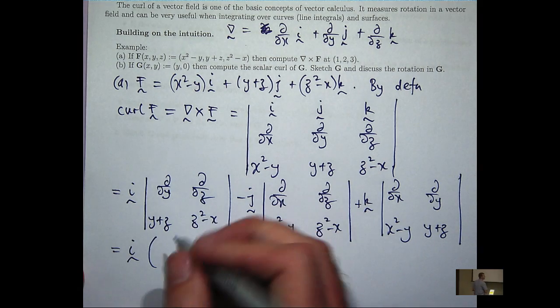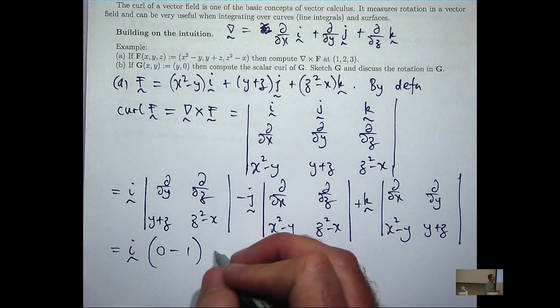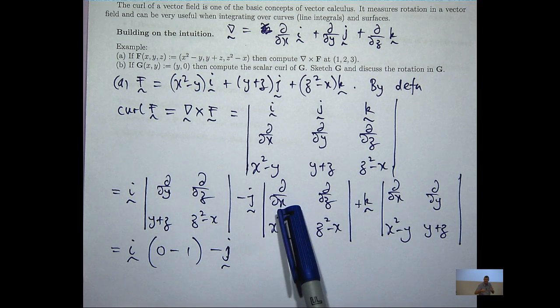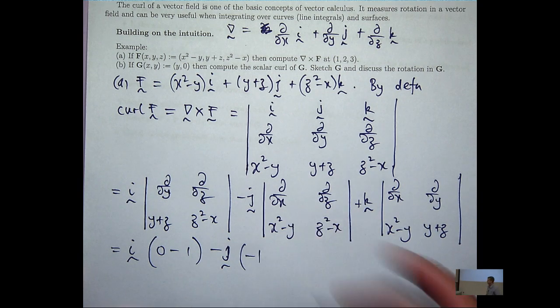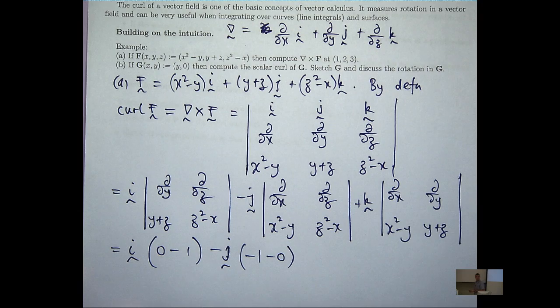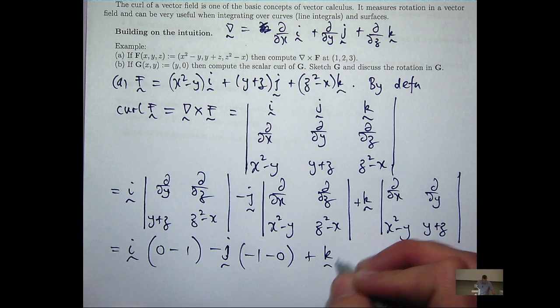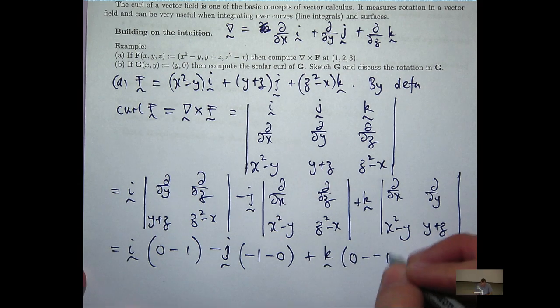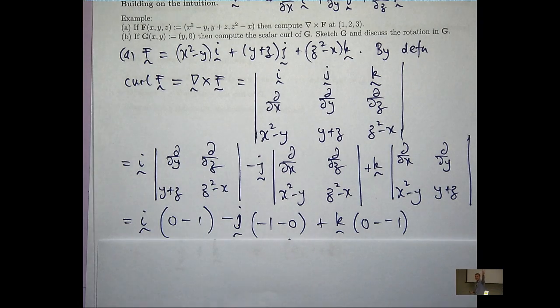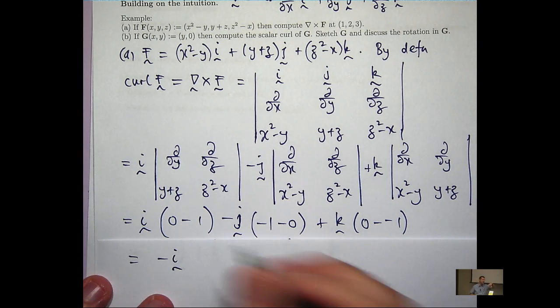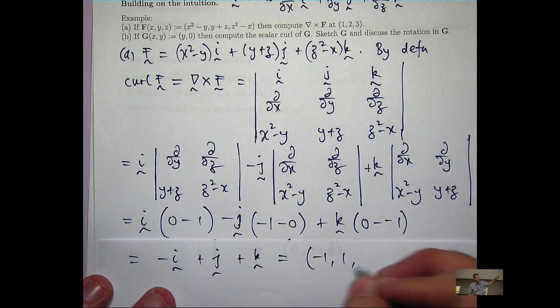If you expand each of those, let's see what happens. d/dy of this, that's going to be zero minus d/dz of this, that's going to be one. d/dx of this minus d/dz of that - well, d/dx of this is minus one, d/dz of that's zero. d/dx of that zero minus d/dy of that, you're going to get a minus one there. So I've got minus i plus j plus k. If I write that out as an ordered triple, minus one, one, one.